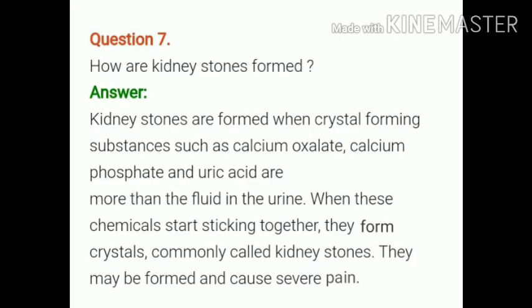Question number 7. How are kidney stones formed? Answer. Kidney stones are formed when crystal-forming substances such as calcium oxalate, calcium phosphate, and uric acid are more than the fluid in the urine. When these chemicals start sticking together, they form crystals commonly called kidney stones, which may cause severe pain.